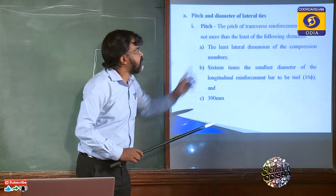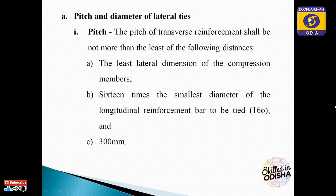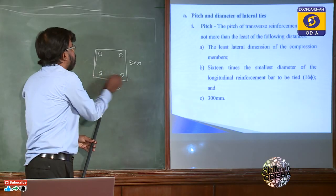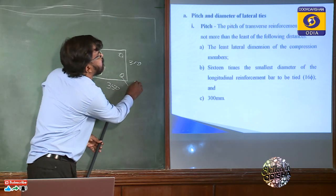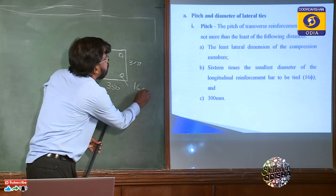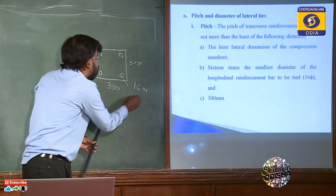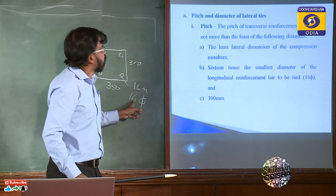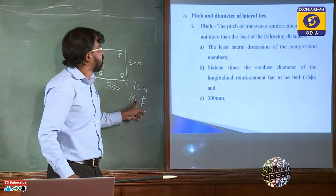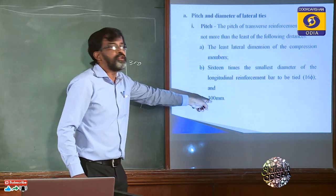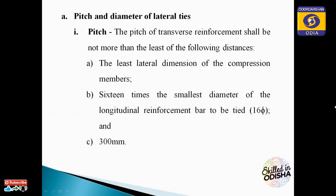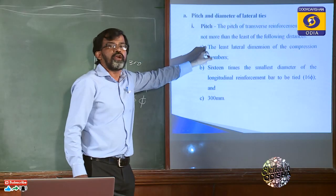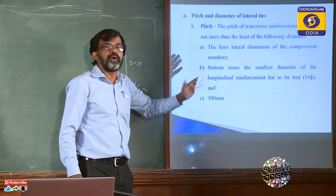The second condition is that the pitch cannot exceed 16 times the smallest diameter of the longitudinal reinforcement. For example, if the longitudinal bar diameter is 16mm, then 16×16 = 256mm is the limit. The third condition is that in no case shall the pitch exceed 300mm. The pitch must satisfy the minimum of all three conditions.